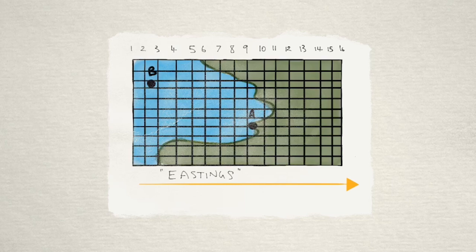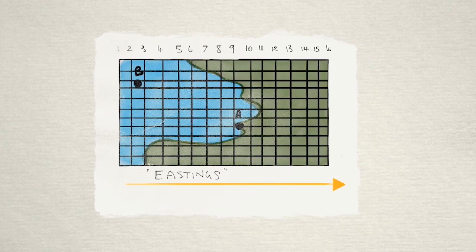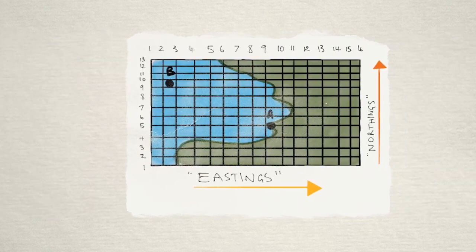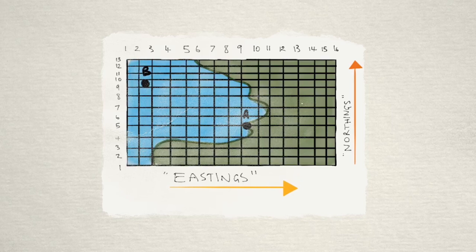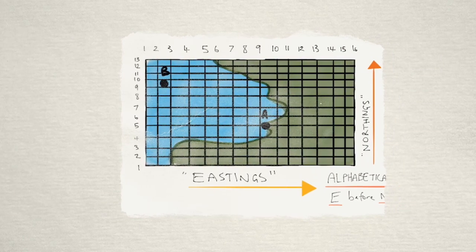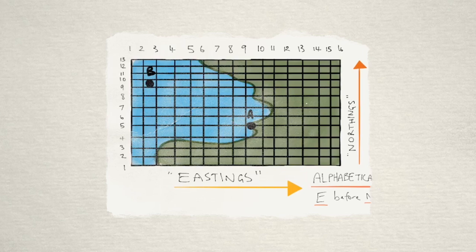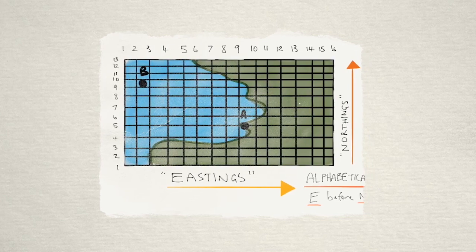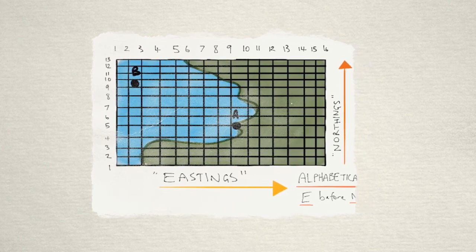We'll call those vertical lines going in an easterly direction eastings and the lines running from south to north northings. And whenever we're referring to these, the eastings always come before the northings. Just remember it's in alphabetical order, E before N.